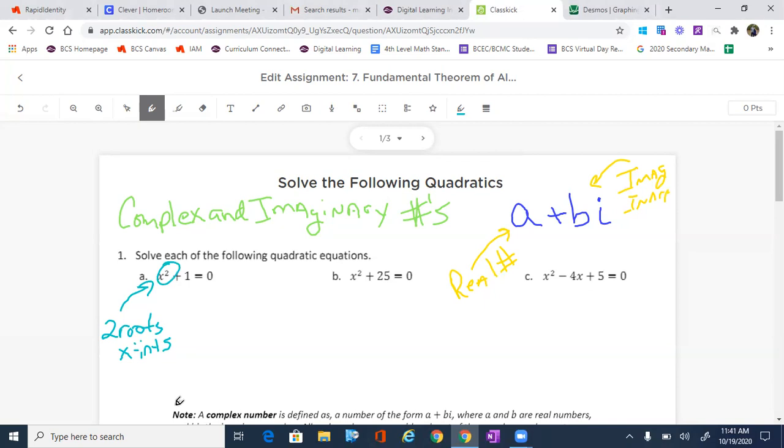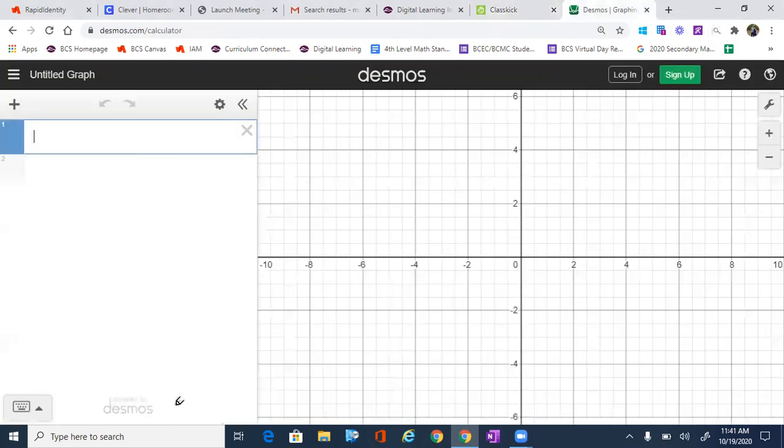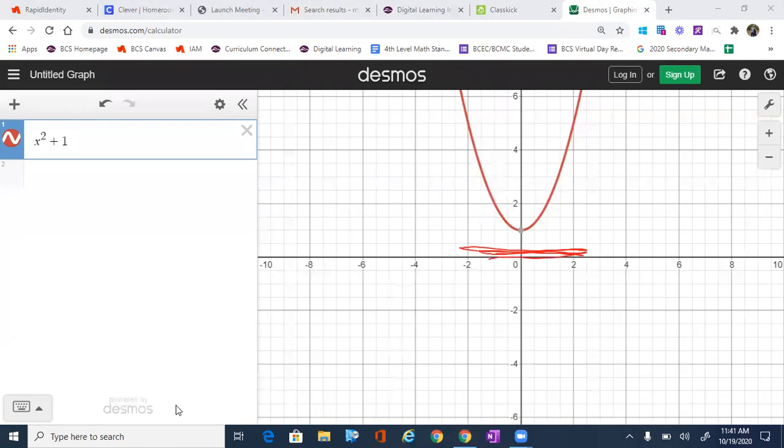So in this case, we should have two roots, but if we go over to Desmos and we type in x squared plus one, we're looking for two roots, but what you're gonna notice just by the graph right here is that there's nothing on the x-axis. There are no x-intercepts in this case. And when there's no x-intercepts, but there's supposed to be some, those are imaginary and complex roots.